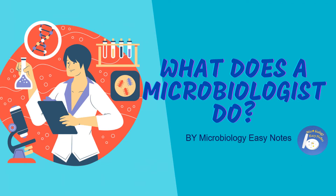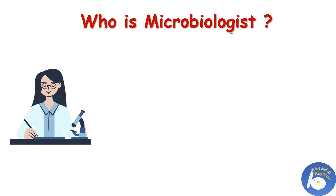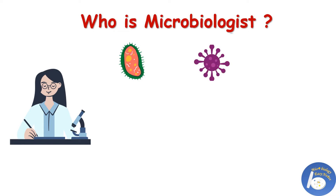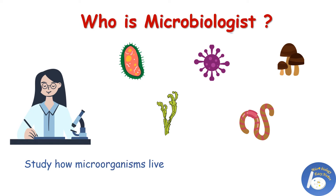Hello everyone, welcome back to my channel Microbiology Easy Notes. If you like this channel, please like, subscribe, comment and share. Today we are going to know: what does the microbiologist do, what are the types of microbiologist, and what are the qualities a good microbiologist must possess. A microbiologist is a person who studies different types of bacteria, viruses, fungi, algae, and parasites. They study how these microorganisms live, grow, and interact with their environment.